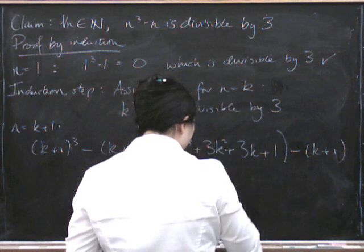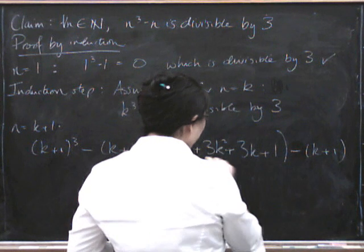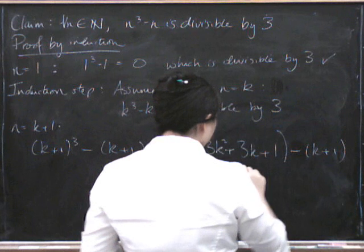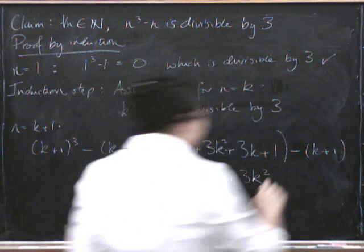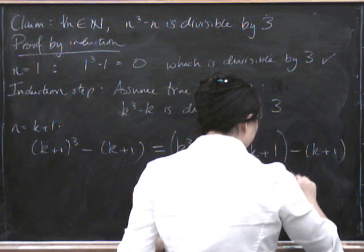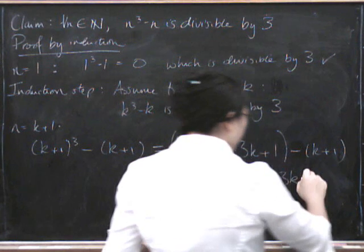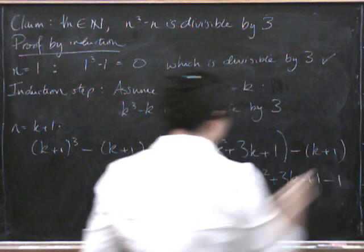Minus k. So there's that bit. Now what's left? We've got 3k squared plus 3k plus 1 minus 1.